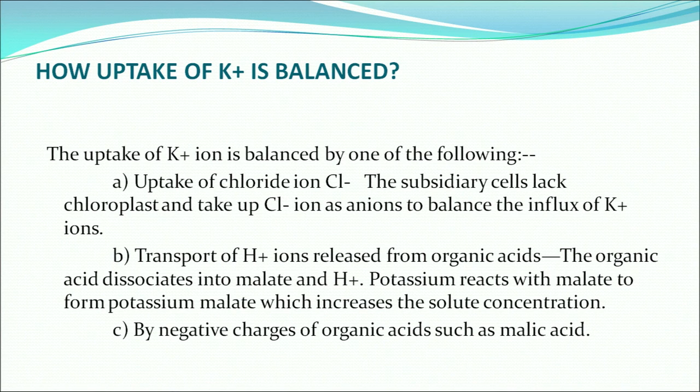Transport of hydrogen ions is very necessary for the increase and decrease of pH concentration and acidity. Hydrogen ions are released from organic acids. The organic acid dissociates into malate and hydrogen ions. Potassium reacts with malate to form potassium malate, which increases solute concentration, along with the negative charges of organic acids such as malic acid.